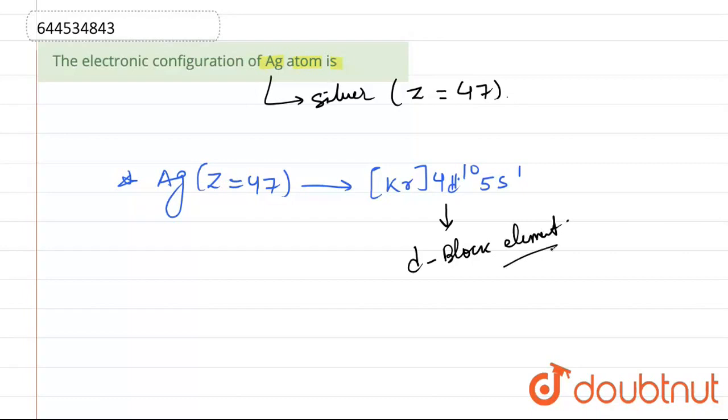D block element. And this is the required electronic configuration. That is KR, 4D10 and 5S1. 5S contains one electron and this D orbital is fully filled. Thank you.